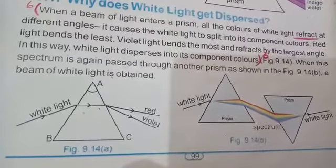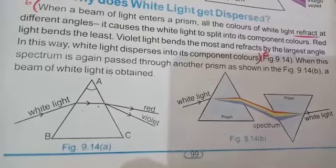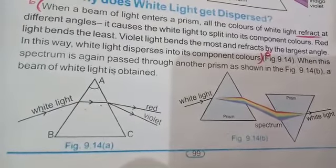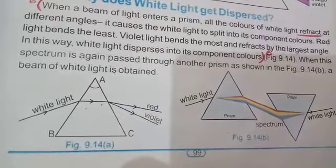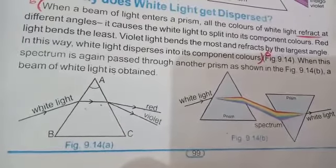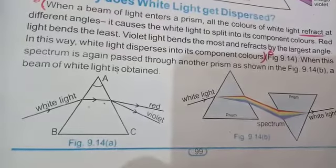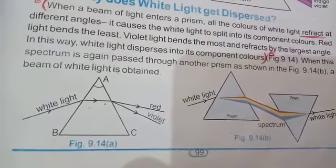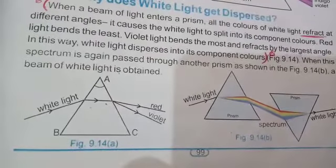Today we will study the reason for the dispersion of light. As we have studied, when light enters from one medium to another, it changes its angle and speed, and this is called refraction of light. White light is made up of seven different colors, and all these colors of light or components of light refract at different angles.